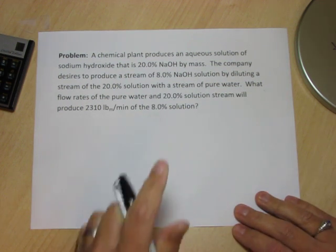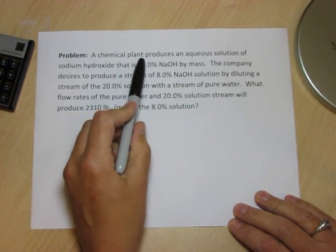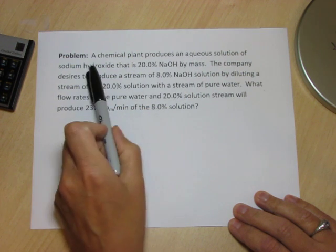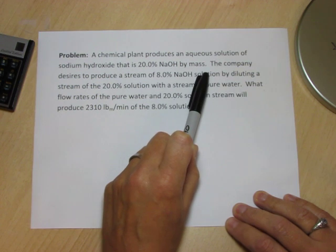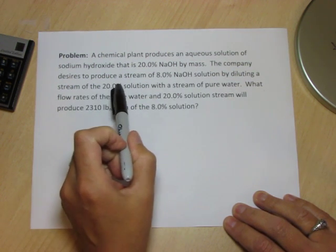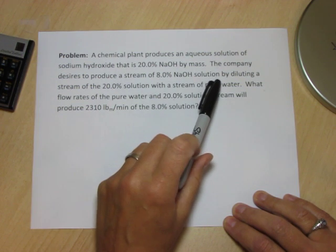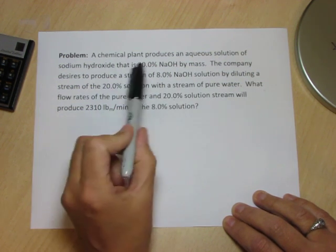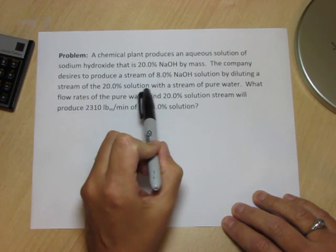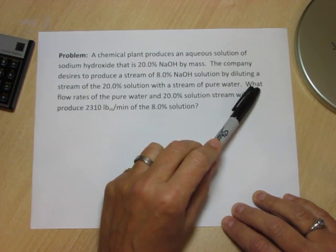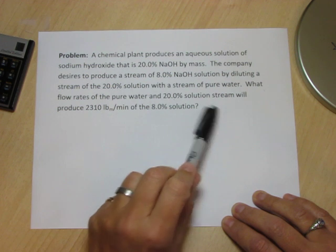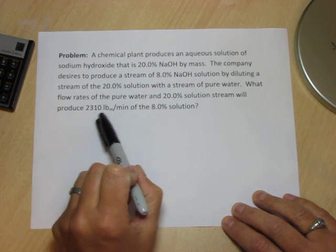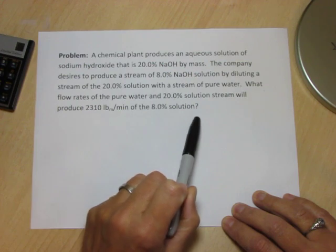So the problem I'm considering is this: A chemical plant produces an aqueous solution of sodium hydroxide that is 20% NaOH by mass. The company desires to produce a stream of 8% NaOH solution by diluting a stream of the 20% solution with a stream of pure water. What flow rates of the pure water and 20% solution stream will produce 2310 lb/min of the 8% solution?